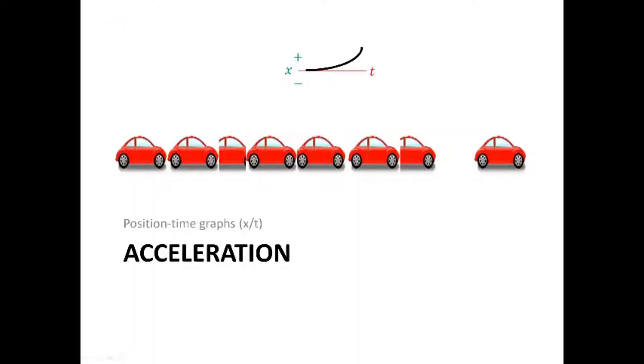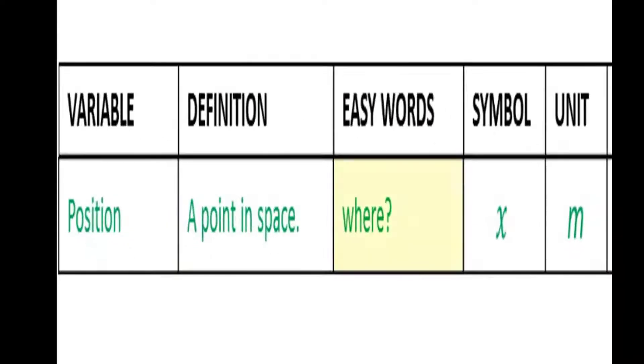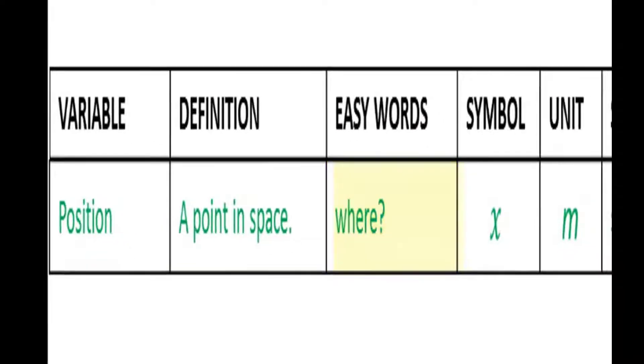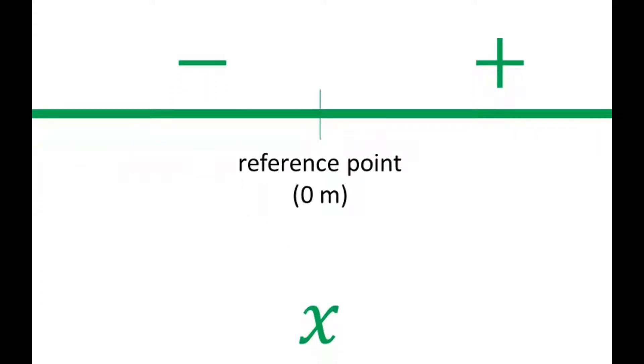Let's look at position-time graphs for accelerated motion. Remember that position means where an object is. In linear motion, we define one side of the reference point to be positive and the other side then is negative. In the examples we're going to use here, we define to the right of the zero position as positive and so to the left is negative.